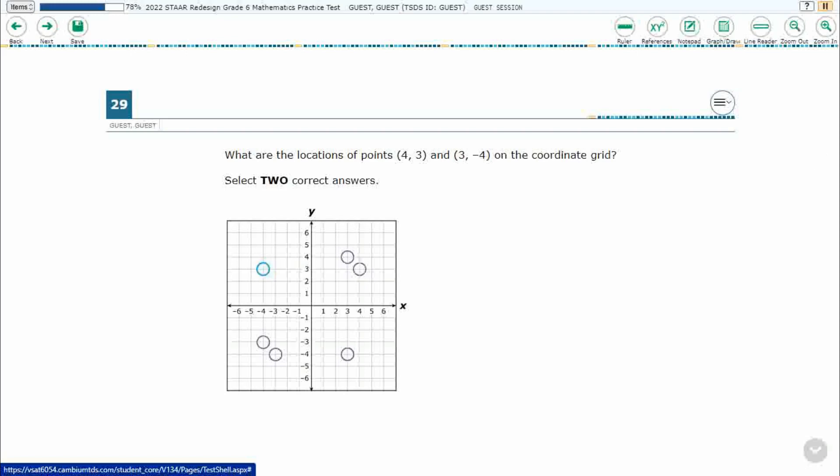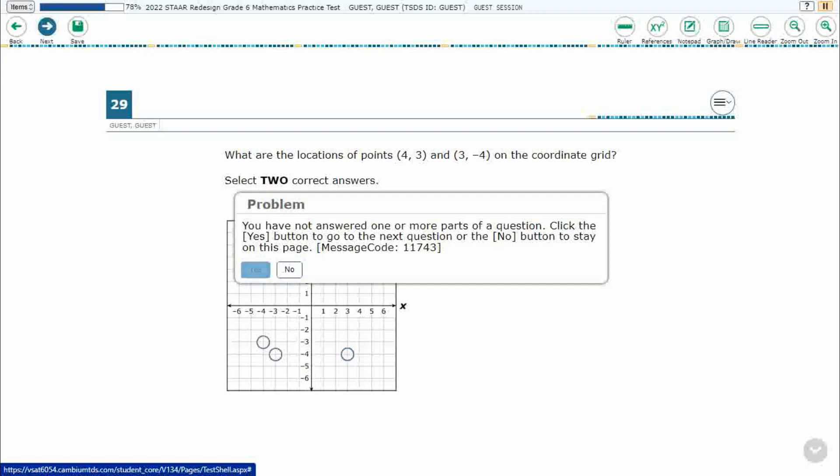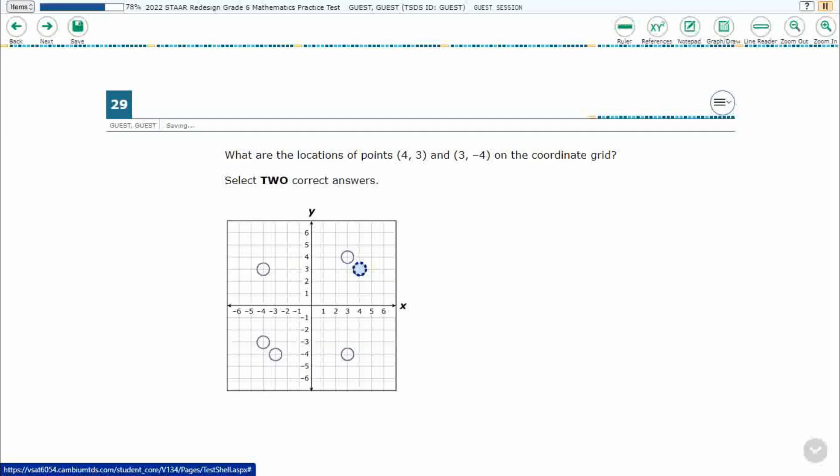So if I select any of these, you're going to get a little bit of a dashed blue circle. But what happens if I just try to select one and hit next, you're going to get an error message that says you have not answered all of it.